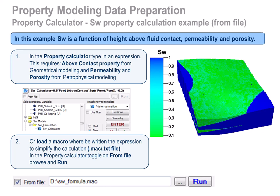If the statement is created in text editor, make sure it has a .mac or .txt extension, then use 'From file' in property calculator, browse the file, and click on run.